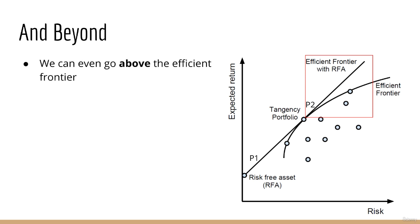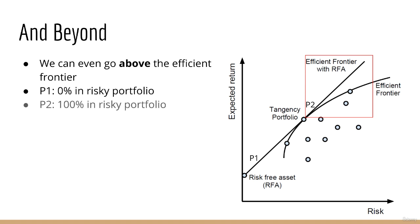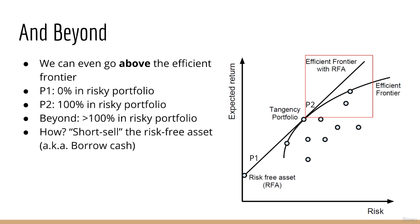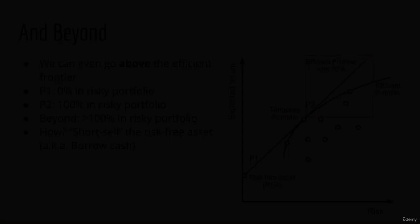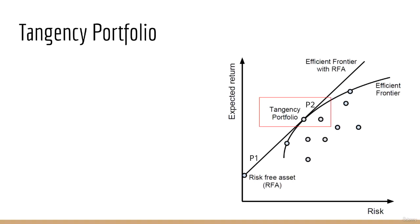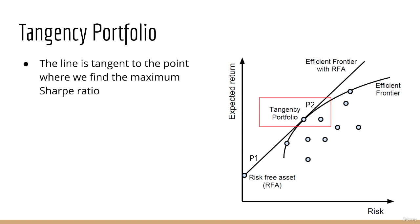Another interesting point about this line is that it can extend above the efficient frontier. The point on the left where we have zero risk means we invest zero percent into the risky portfolio, and the point on the efficient frontier with maximum Sharpe ratio means we invest 100 percent into the risky portfolio. Therefore we can go further than this if we invest more than 100 percent into the risky portfolio, which we can achieve by shorting the risk-free asset — this is equivalent to borrowing money so that you can invest more into the risky portfolio.